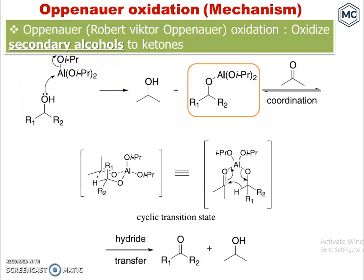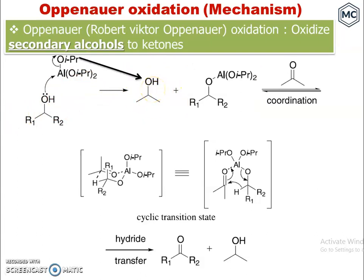Since aluminum cannot accommodate more ligands, it expels one isopropoxide. This isopropoxide then accepts a proton and becomes isopropanol. The remaining isopropoxide forms a coordination bond with acetone.